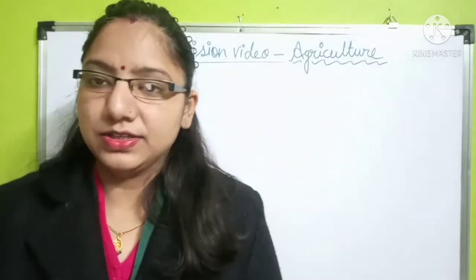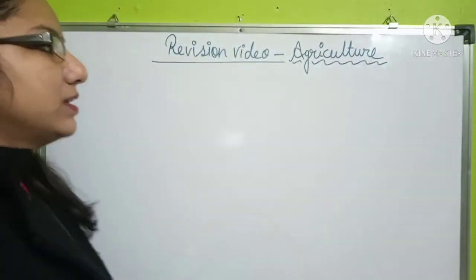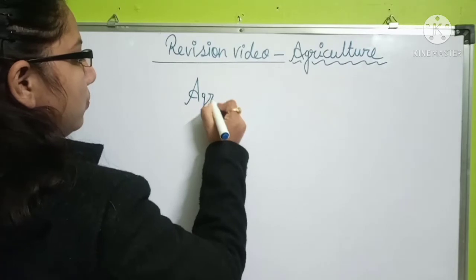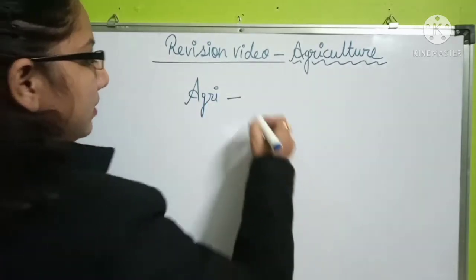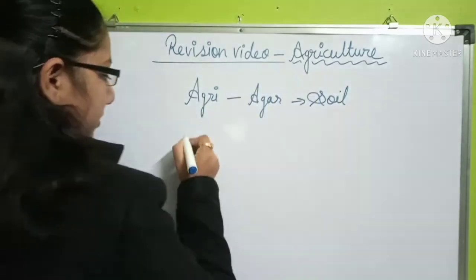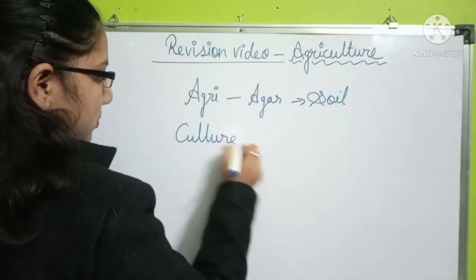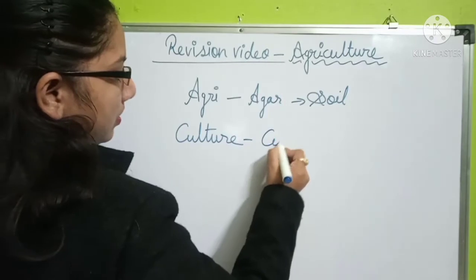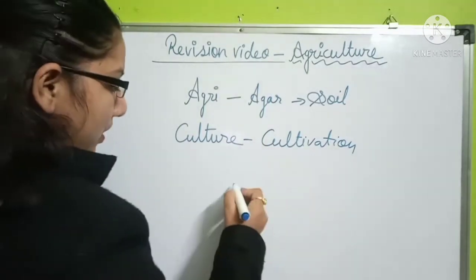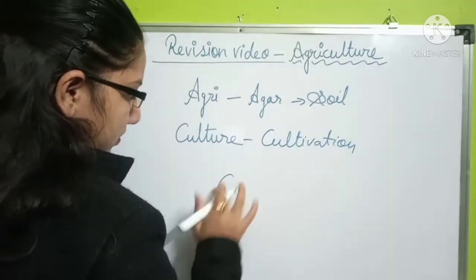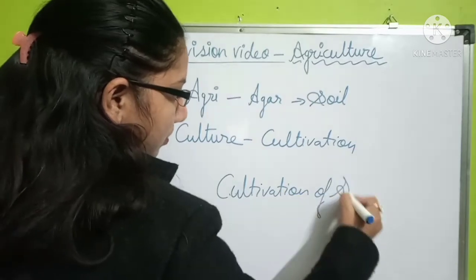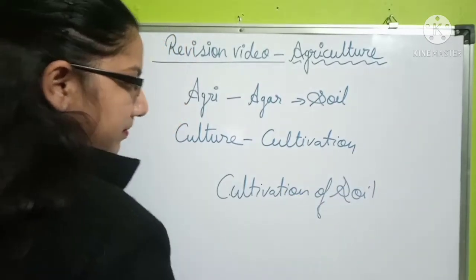What is agriculture? Generally, we say agriculture is farming, but agriculture is a mixture of two words — agri or agar — meaning cultivation. So the cultivation of soil is agriculture.